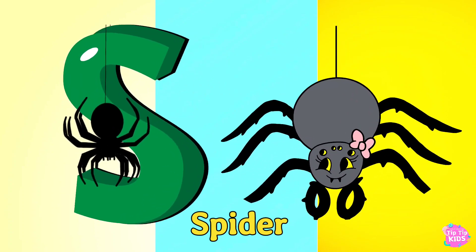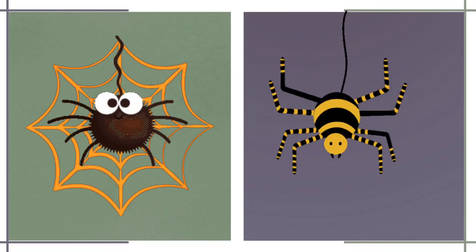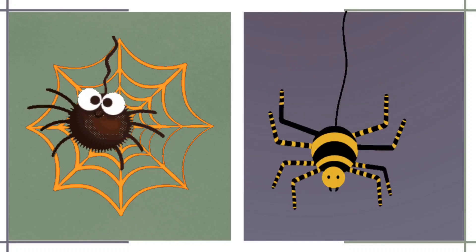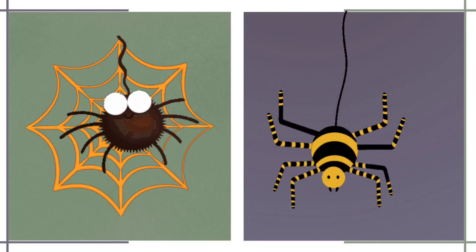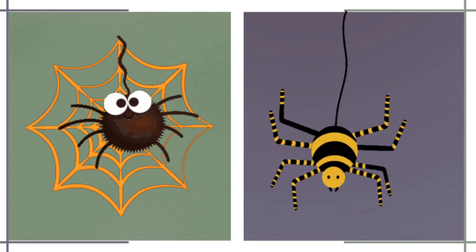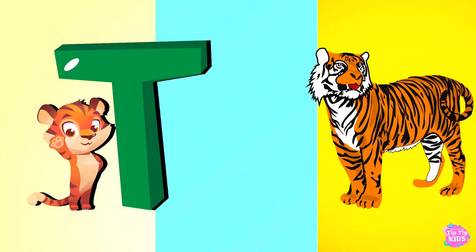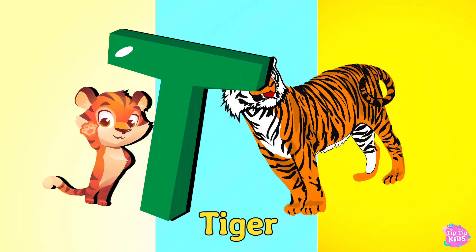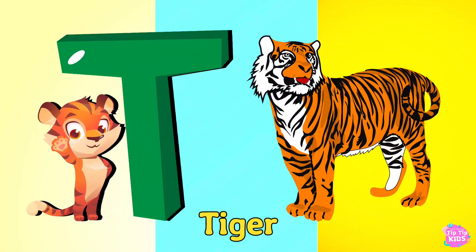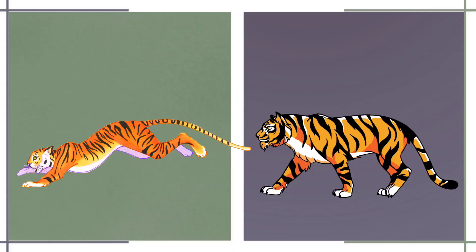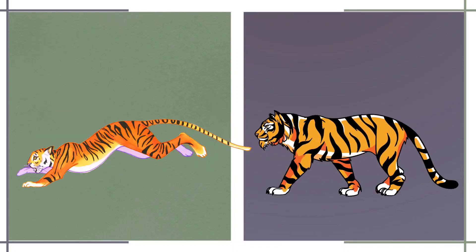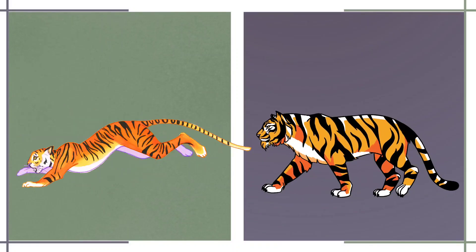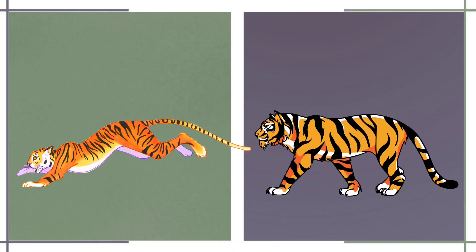S is for Spider. S, Spider, S. Spider, S. Spider. T is for Tiger. T, Tiger, T. Tiger, T. Tiger.